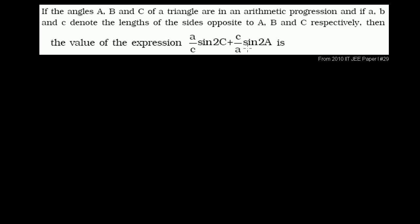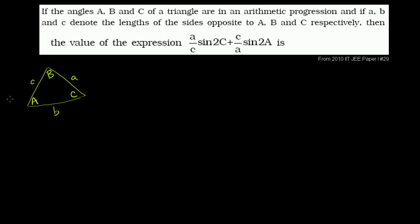So let's see if we can work our way through this. Let's draw the triangle so we have a visualization of what all the letters represent. We have the angles A, B, and C. And the sides opposite them are the lowercase versions. The side opposite to capital A is lowercase a, opposite to capital B is lowercase b, and opposite to capital C is lowercase c.